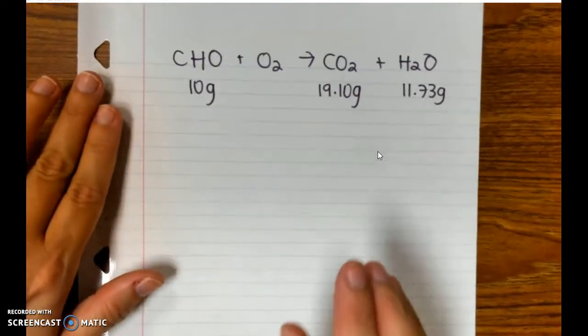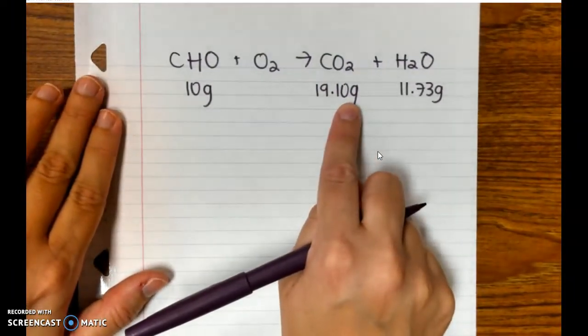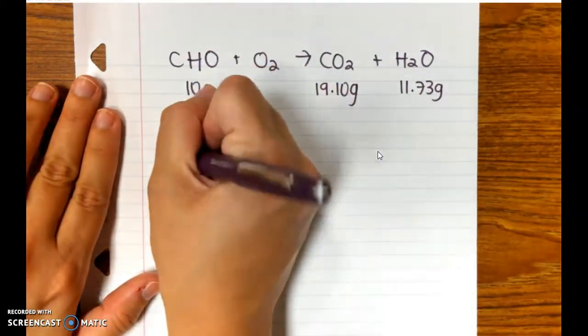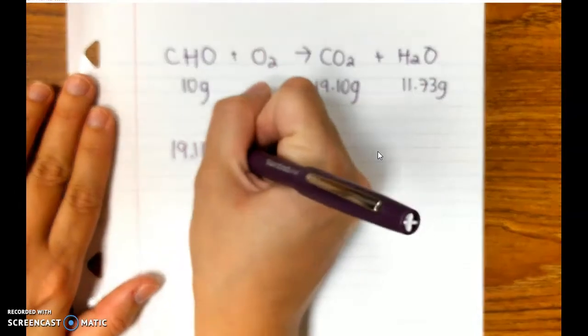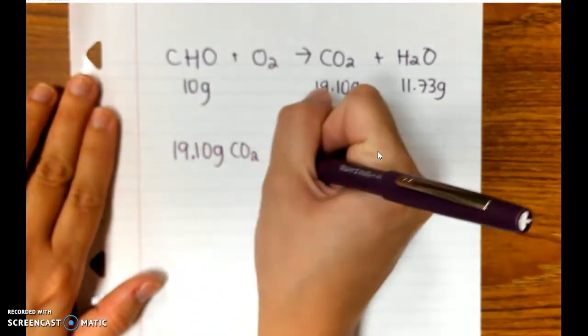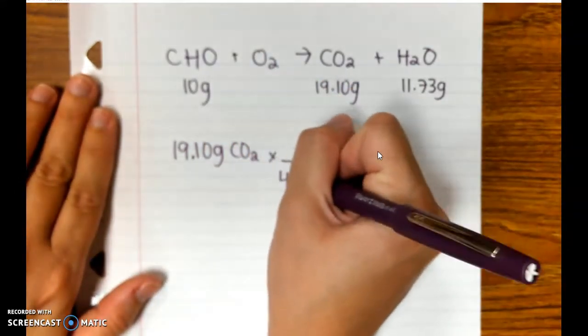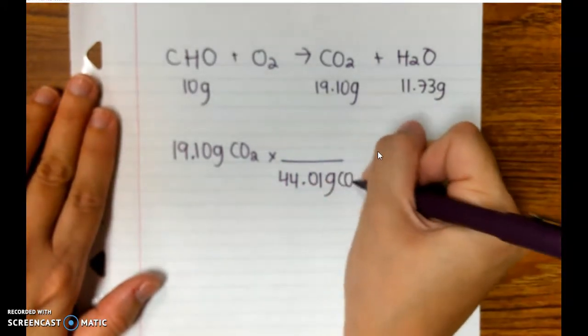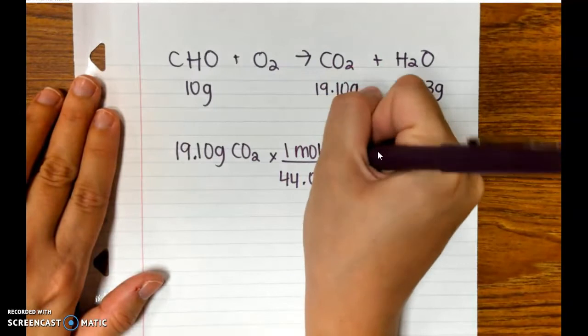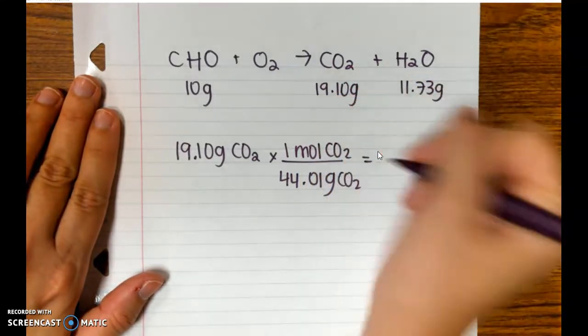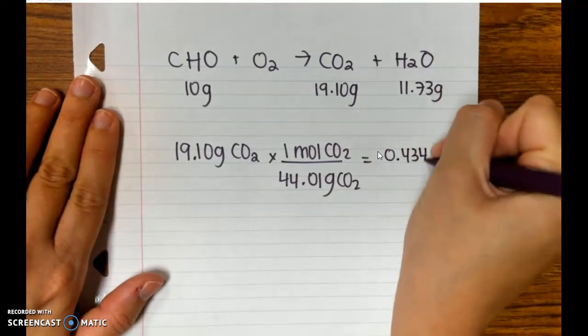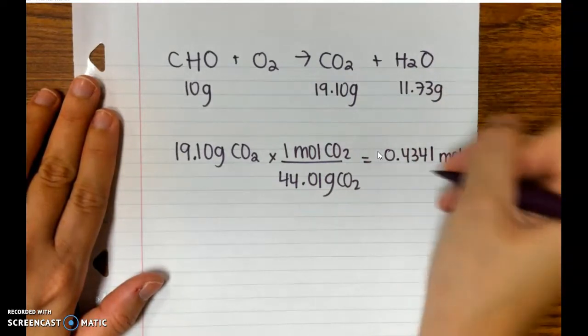The first thing we want to do is take our mass of CO2 and find how many moles of CO2 were made. So 19.10 grams of CO2, you'll divide it by carbon dioxide's molar mass, which is 44.01, and that's going to equal 0.4341 moles of CO2.